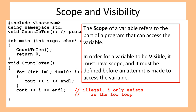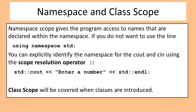The scope of a variable refers to the part of the program that can access it. For a variable to be visible, it must have scope and must be defined before an attempt is made to access it. Namespace scope gives the program access to names declared within the namespace. If you do not want to use 'using namespace std;', you can explicitly identify the namespace for cout and cin using the scope resolution operator ::.